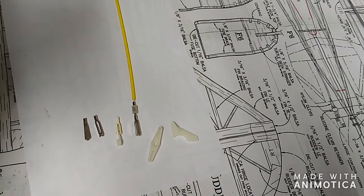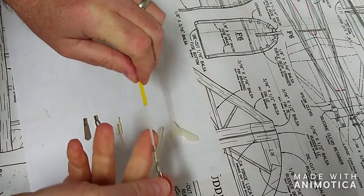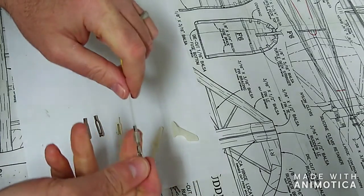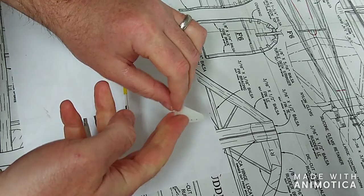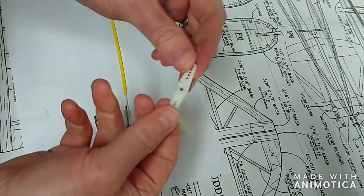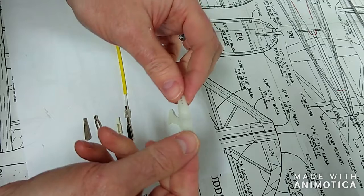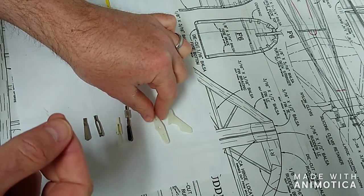So, clevises are connections that connect push rods, this white rod here, to control horns, such as these on the control surface, or onto servo arms, which is directly connected onto the servo.